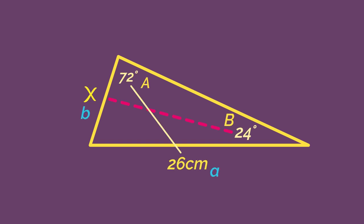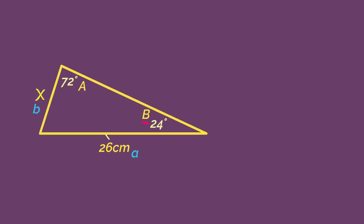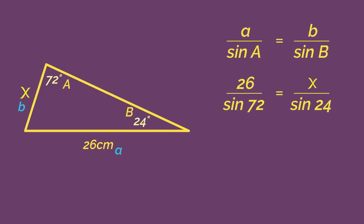We need to use the sine rule. We have 72 and 26 as a complete pair and x and 24 are the half pair. Substitute them into the sine rule and we rearrange to get x equals sine 24 multiplied by 26 over sine 72.